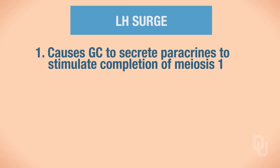First, this LH surge is going to cause your granulosa cells—abbreviated GC—to secrete paracrines to stimulate completion of meiosis I. At the end of meiosis I, we now have a secondary oocyte. When the Graafian follicle ruptures at ovulation, it's releasing a secondary oocyte. If you don't remember that, go back and review oogenesis to see where we are within oogenesis.